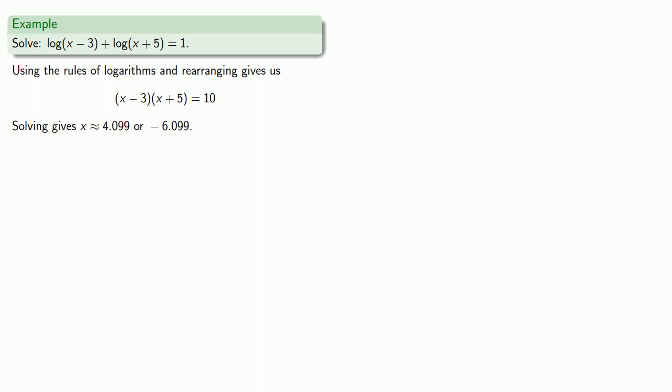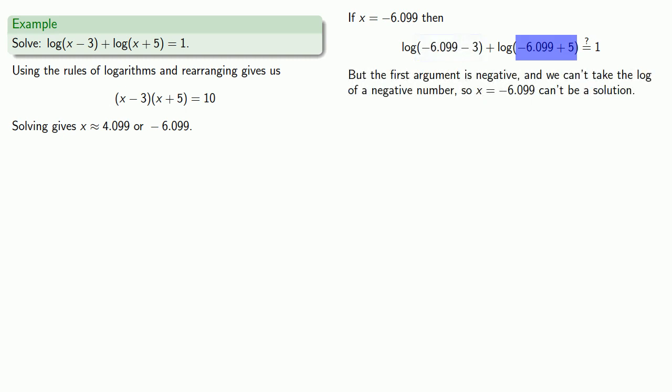On the other hand, if x equals negative 6.099, then substituting these values into our original equation gives us, and here we have a problem, the first argument, and for that matter the second, are both negative, and we can't take the log of a negative number, so x equals negative 6.099 can't be a solution. It's an extraneous solution, and so the only solution is x approximately 4.099.